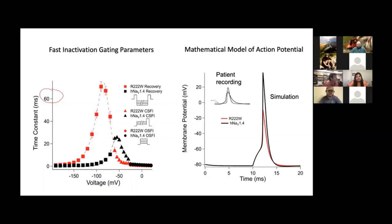Those parameters can be extracted as rate constants for the model, and we can make a simulated action potential. On the right, the actual patient recording — done in Germany — shows the larger action potential from a control patient and the smaller one from a person with the mutation. The simulation that Landon Bayless-Edwards did, with experiments she and Paula Arinzi helped with, was able to recapitulate the patient attenuation of the action potential in simulation. So math actually explains biology — sometimes.